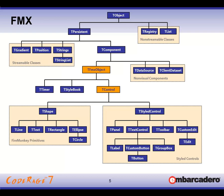Looking over into FireMonkey, the base looks very similar. You still have TComponent and non-visual controls hang off of that. But all FireMonkey visual controls involved in styling and building things are driven by TFMXObject, with TControl as a direct descendant. So there is a TControl on both sides, but they're quite different. Underneath TControl you have two sets of classes: shapes and styled controls. Shapes are what are called primitives in FireMonkey — the pieces we use to put things together — and styled controls have all the functionality to be styled and have a custom style registered.